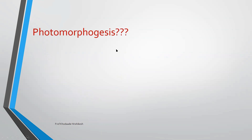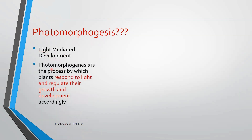So the question arises: what is photomorphogenesis? One can easily determine the meaning — it is light response on morphogenesis. Because of light, morphological changes happen in the plant, which comes under photomorphogenesis. So it is light-mediated development in plants, where photomorphogenesis is the process by which plants respond to light and regulate their growth and development accordingly.